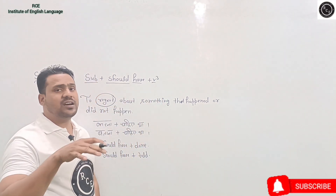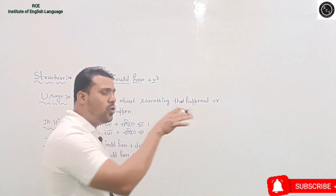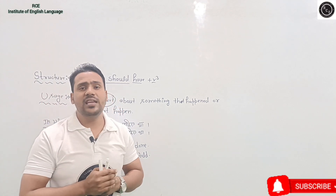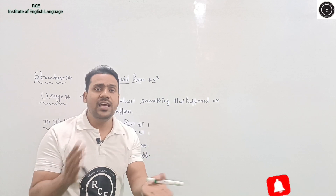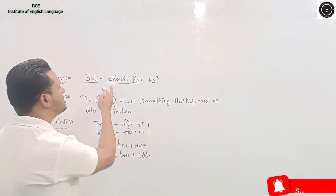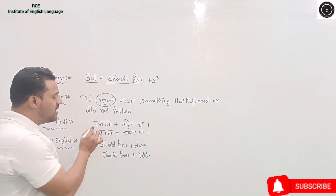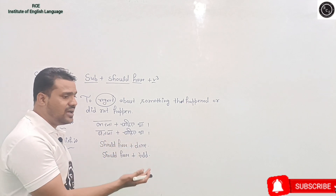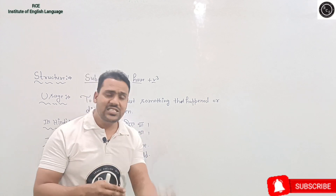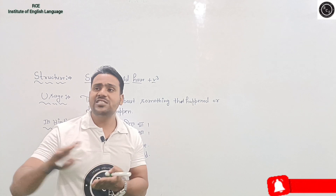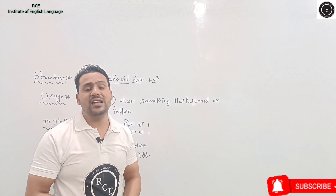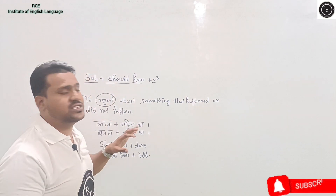We use this structure to talk about past situations — jana chahiye tha, likhna chahiye tha. For example, if you did not invite someone and now you regret it, you feel 'yaar mujhe usko invite karna chahiye tha.' So when we express regret — jab hum afsos zahir karte hain, jab hum pachtate hain — at that time we use this structure.